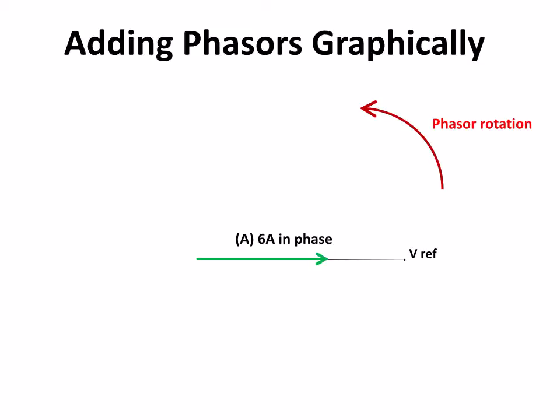They have magnitude, they have direction and a point of application like a vector, but the thing they have in addition is rotation. So phasors rotate around a reference point.